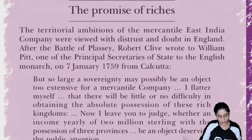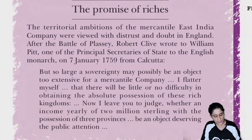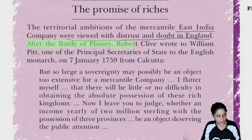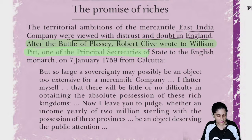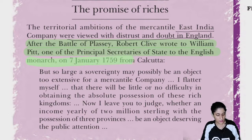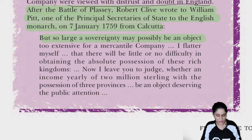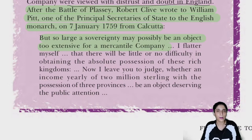The promise of riches and the territorial ambitions of the mercantile East India Company were viewed with distrust and doubt in England. After the Battle of Plassey, Robert Clive wrote to William Pitt, one of the principal secretaries of state to the English monarch, that so large a sovereignty may possibly be an object too extensive for a mercantile company.